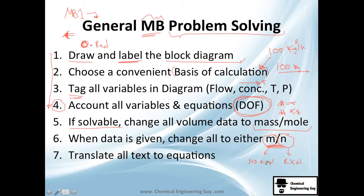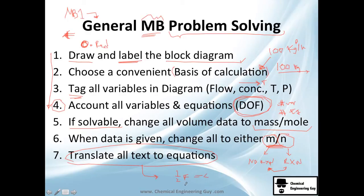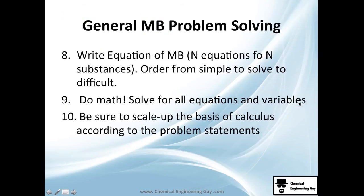You can actually work with either mass or moles — you'll be converting a lot, but if you feel you have a better chance with mass rather than moles, do it. The most important step is translating all text to equations — that's an art. For example, 'the product is one half of the feed' translates to: one half of F equals C. We need equations to solve for variables.